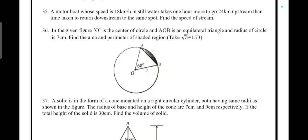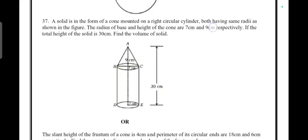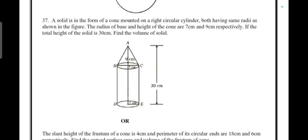In the given figure, O is the center of a circle and AOB is an equilateral triangle with radius 7 cm. Find the area and perimeter of the shaded region. A solid is in the form of a cone mounted on a right circular cylinder, both having same radii.